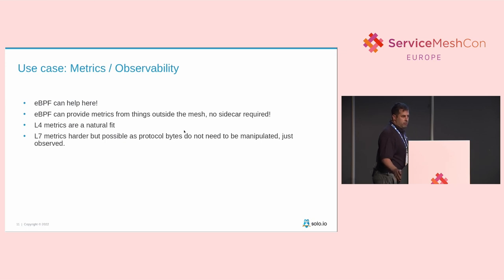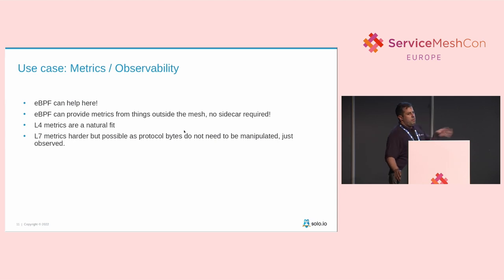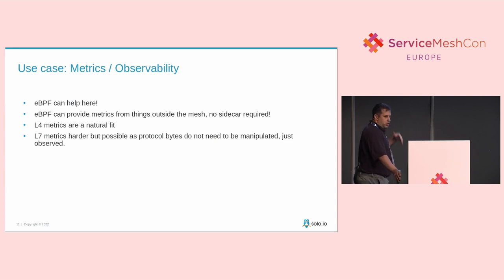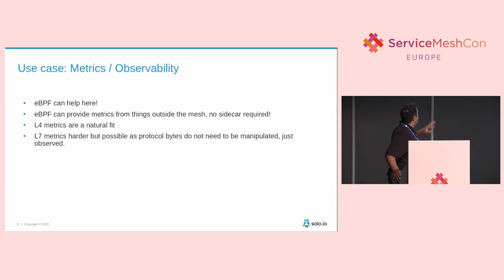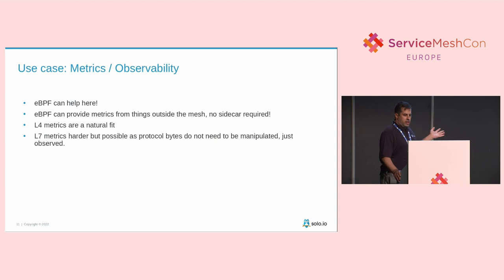Metrics and observability — here eBPF is actually a great fit for service mesh. Because eBPF operates at the kernel level, it can observe all your workloads whether they're in the mesh or not. You get a good amount of L4 observability metrics. As for L7, it's harder but conceivable, because you don't need to manage state — you just need to read bytes on the wire as they arrive and parse them. There are examples on the internet, so it's definitely possible, just a bit harder than L4.